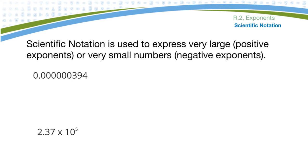Scientific notation is a place where we use exponents — specifically powers of ten — to express very large or very small numbers. Here's a case of a very small number. To change that to scientific notation, I need to move the decimal so that it comes after the first non-zero number. So it needs to move right to there — it'll be 3.94. Then you go times ten, and up here as an exponent you write how many times you had to move it: one, two, three, four, five, six, seven places.